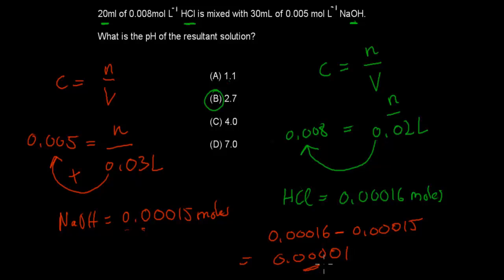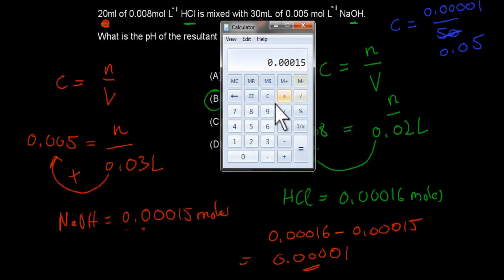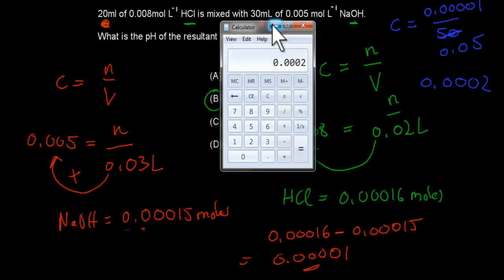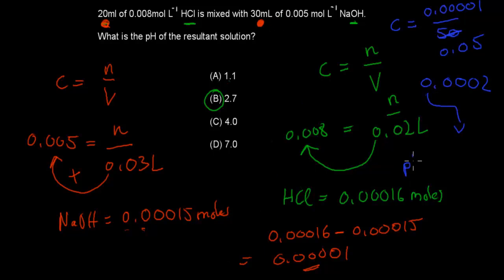Now find the concentration of the remaining HCl. The total volume is 20 + 30 = 50 mL = 0.05 L. Concentration = 0.0001 mol ÷ 0.05 L = 0.002 mol/L. Using pH = −log(0.002), we get a pH of 2.7. So B is the correct answer.